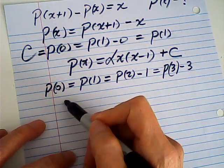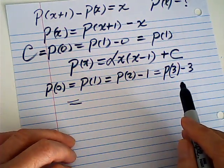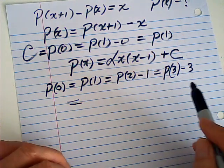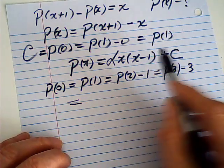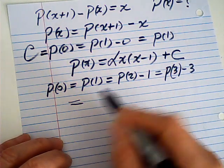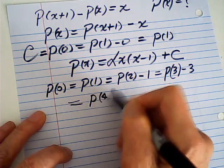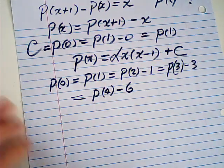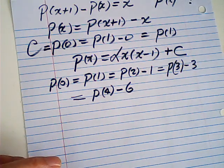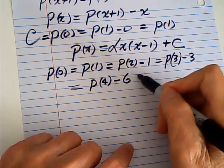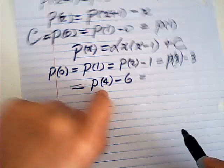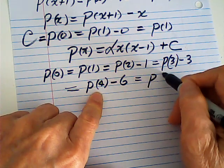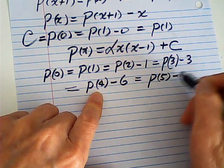P(3) is P(4) minus 3. So this one is P(4) minus 6. P(4) is P(5) minus 4. So it goes P(5) minus 10.